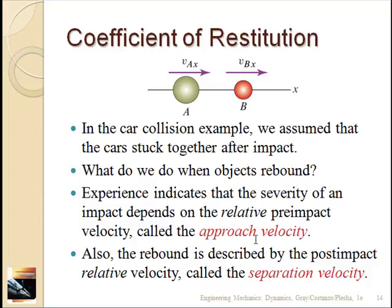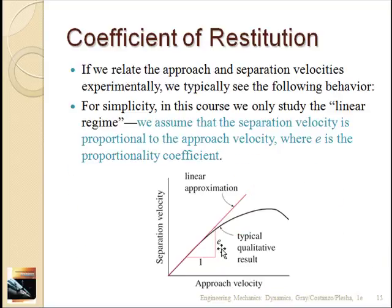This comes about because it's been noticed over time that the rebound depends on the approach velocity — the relative velocity between the two objects. The coefficient of restitution is defined such that the separation velocity (the relative velocity after the collision) is a function of the approach velocity (the relative velocity before). If you do experiments and plot separation velocity versus approach velocity, it's linear for some time period and then goes nonlinear. Over this linear period, you can define the slope of that line to be the coefficient of restitution.